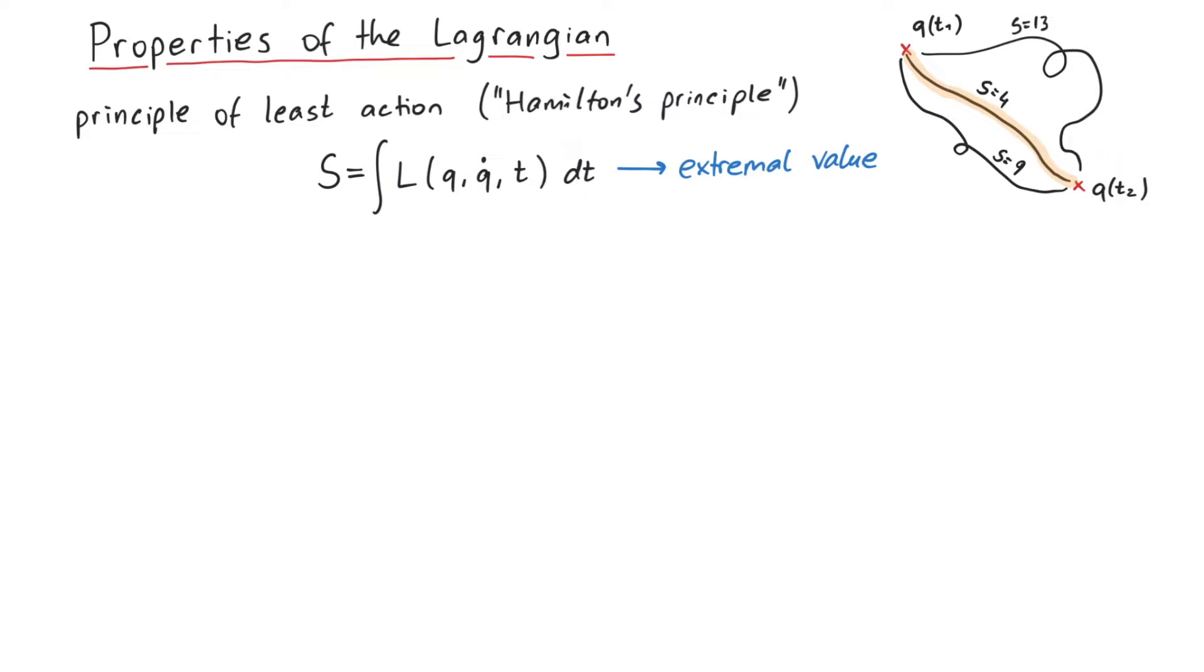Note that the integral over the entire time can also take on the largest value, which means it's still an extremal value. However, for sufficiently small sections, it must be a smallest value. You can find how to calculate the equations of motion by setting delta s equal to 0 in a different video.